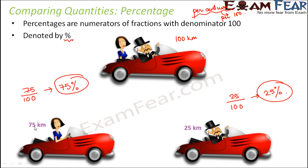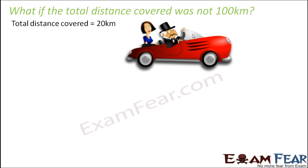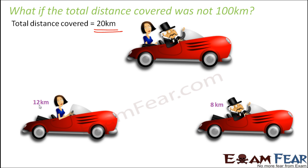In that case, how would you represent it in terms of percentage? The entire scenario remains the same, just that instead of 100 kilometers, if you have some other number, what will happen? So what if the total distance covered is 20 kilometers? Let's say Mrs. Smith drove for 12 kilometers and Mr. Smith drove for 8 kilometers. So how would we find out the percentage? Mrs. Smith covered 12 kilometers out of 20 kilometers. But how do I convert this into percentage? Because percentage means the denominator should be 100 — out of 100, how much?